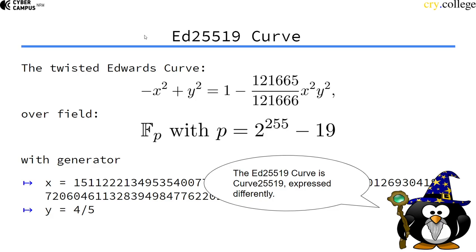So the curve ED25519 is actually just curve 25519 expressed as a twisted Edwards curve.